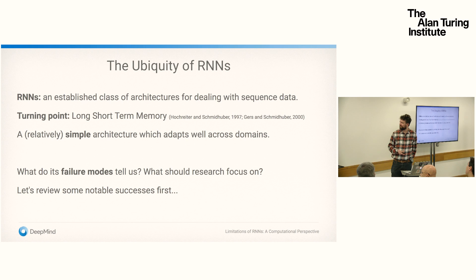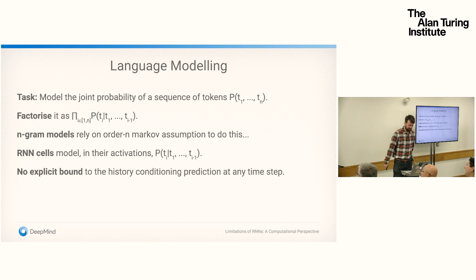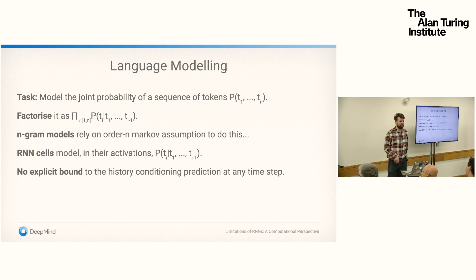No one likes a negative talk, so I'm going to start by reviewing some notable successes of this architecture first. Language modeling — apologies if this is familiar — is the task of modeling the joint probability of a sequence of tokens, for example of English text. The probability of a sequence of tokens factorizes nicely left to right or right to left as the probability of the next token given the tokens you've seen so far, taking the product of this across the sequence.